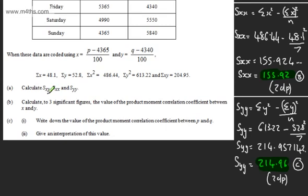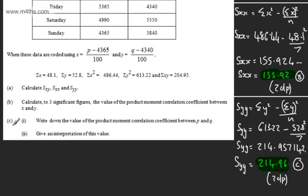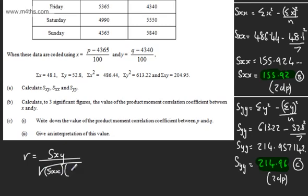In part B, we're asked to calculate to three significant figures the value of the product moment correlation coefficient between x and y. The formula is r equals Sxy over the square root of Sxx multiplied by Syy, as we saw in the last video.